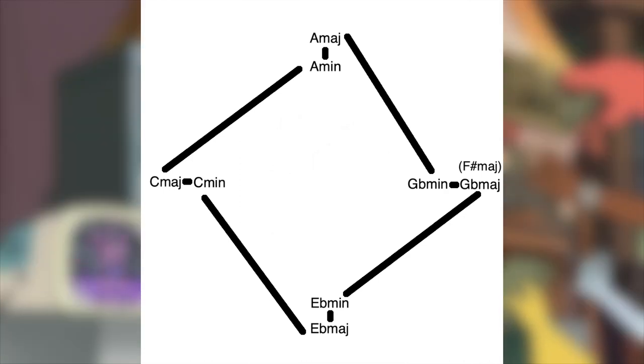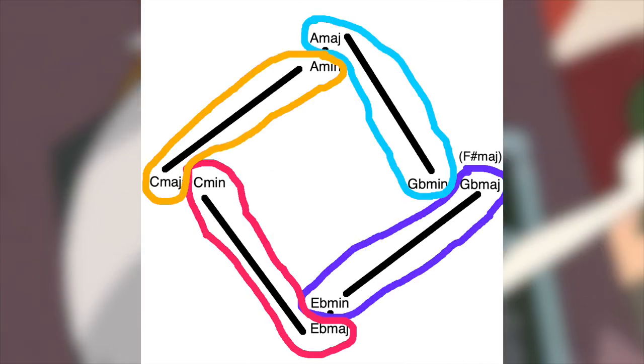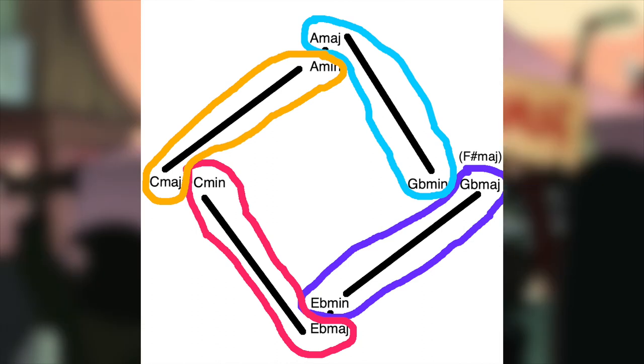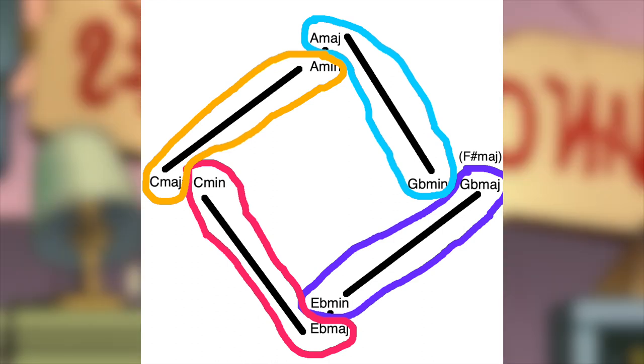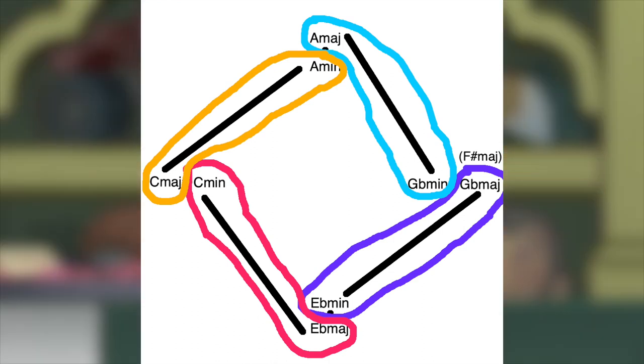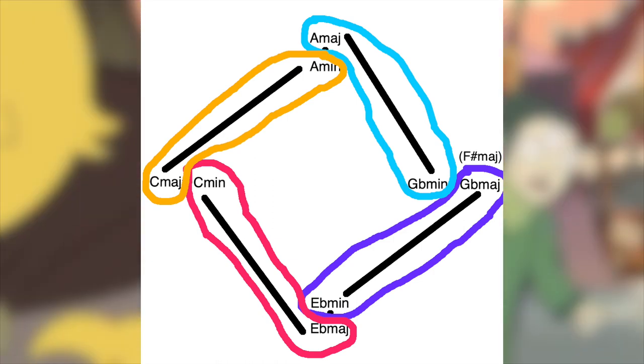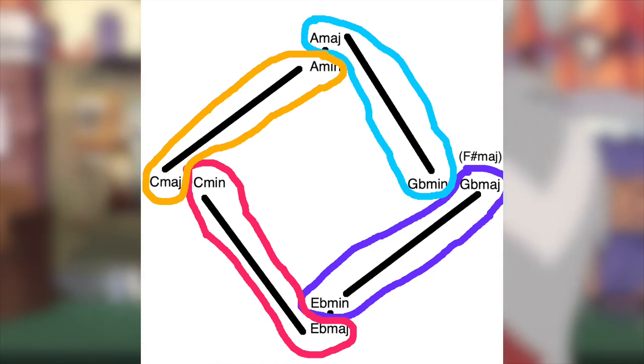It's important to think of the system as having sides of the axis rather than points. Since any major's relative minor shares the exact same notes and chords, the only difference between them is context. We're not borrowing any unique colors by going between the two, so functionally, they're kind of the same. We can only get a different color by venturing onto a different side of the box.